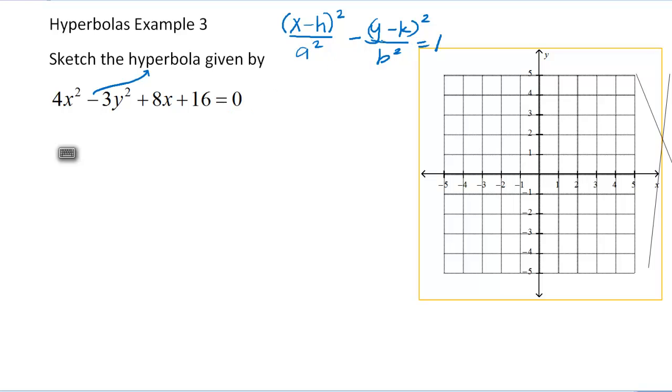Now notice this looks nothing like this. So the first thing I'm going to do is move over the 16 and then collect the x terms. So we get 4x squared plus 8x, and then I'm going to leave some space and I get minus 3y squared equals to now move this 16 over it gives me negative 16.